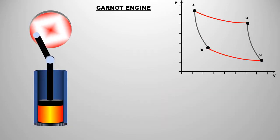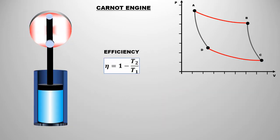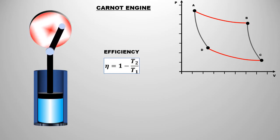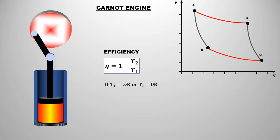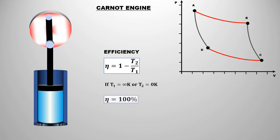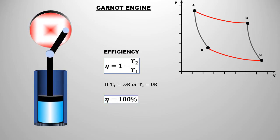This complete cycle is called the Carnot cycle. And the engine working on it is called the Carnot engine. The efficiency of a Carnot engine depends on the temperature of both reservoirs. Either raise the temperature of the hot reservoir to infinite Kelvin or lower the temperature of the cold reservoir to zero Kelvin. In both cases, the efficiency will be 100%. But it is not possible to do so. Hence, the Carnot engine is just a theoretical ideal engine.